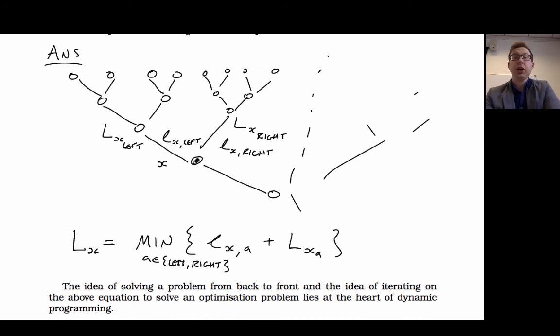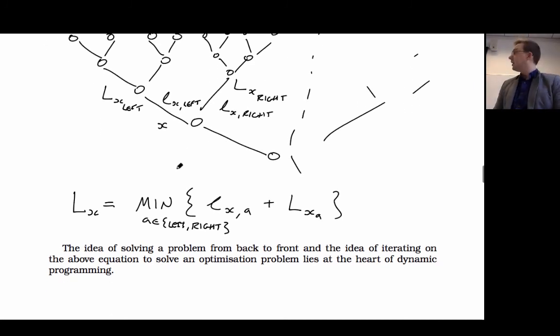The cost that you incur is the cost of the movement plus the cost of the place that you end up at. So that's one point to note - this equation that we've been writing down. The second thing to note is that the idea of dynamic programming is the idea that we solve a problem from back to front. So essentially iterating on this equation, starting at the leaves and working our way towards the root.